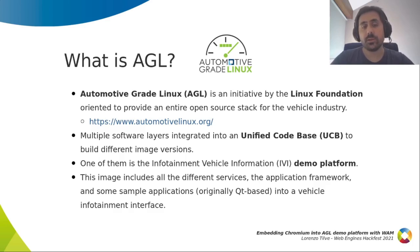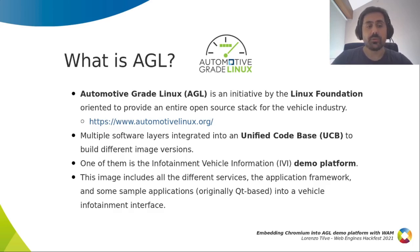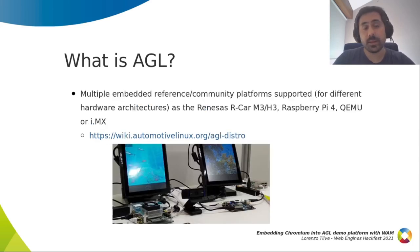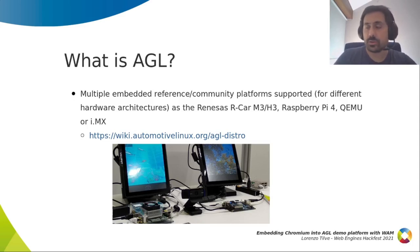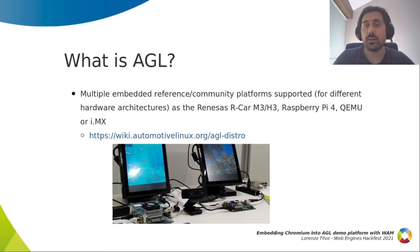This image basically includes the different services that connect to the internal layers of the vehicle, an application framework, and on top of that an application layer which was originally Qt-based to show an infotainment interface. AGL provides this code base for different reference and community platforms supported for different architectures such as ARM64 or Intel-based, and hardware targets like the Renesas R-Car M3 or H3, Raspberry Pi 4, QEMU, or several i.MX boards.